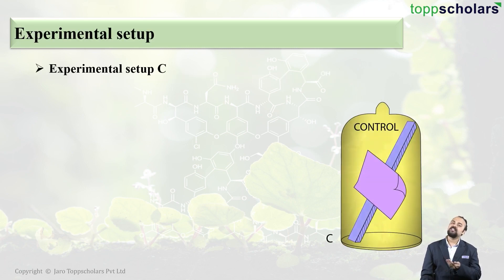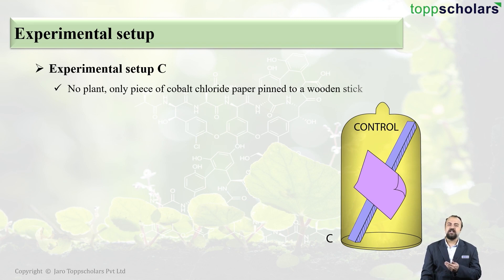Moving on students, the last setup is the setup C. Students, this is called as the control. This particular setup does not contain any plant. It only contains one piece of cobalt chloride paper which is pinned to a wooden stick.